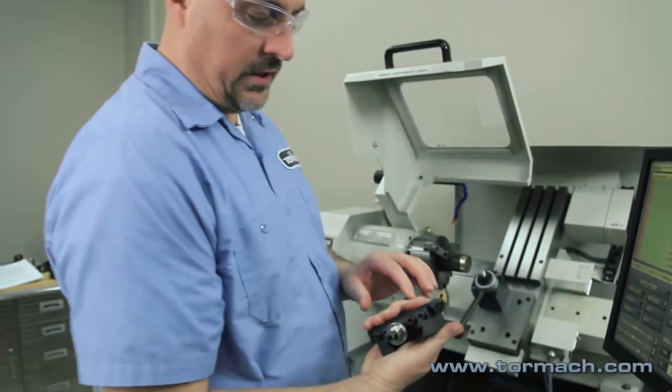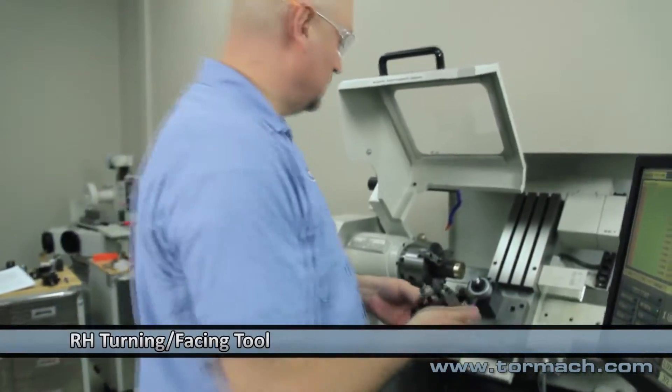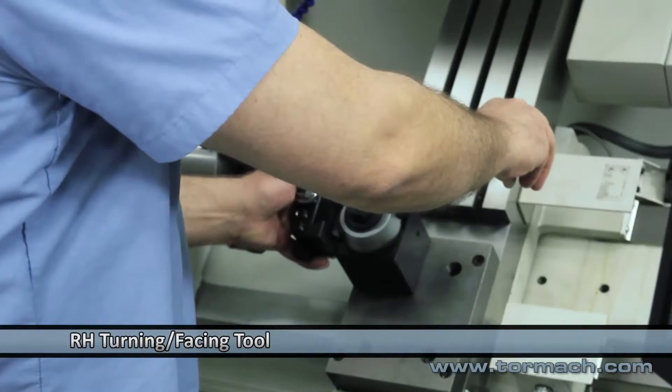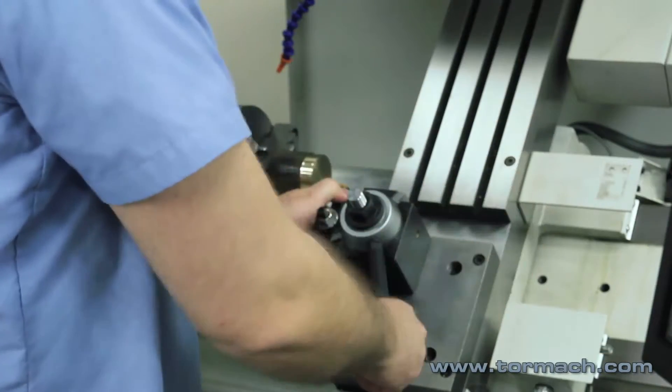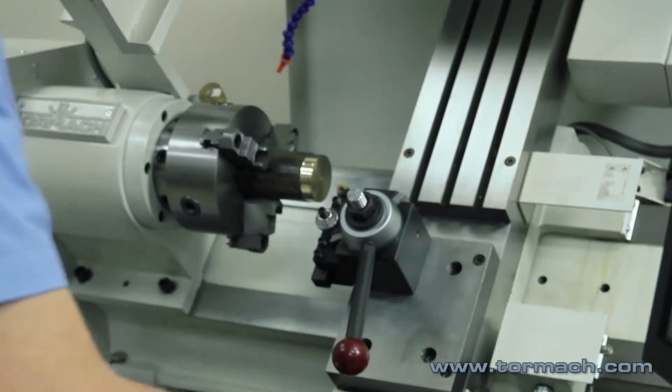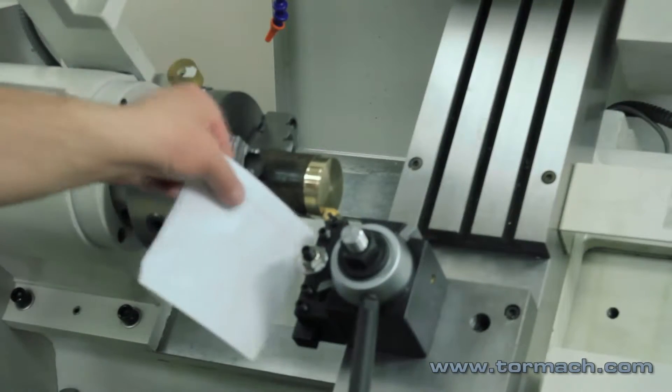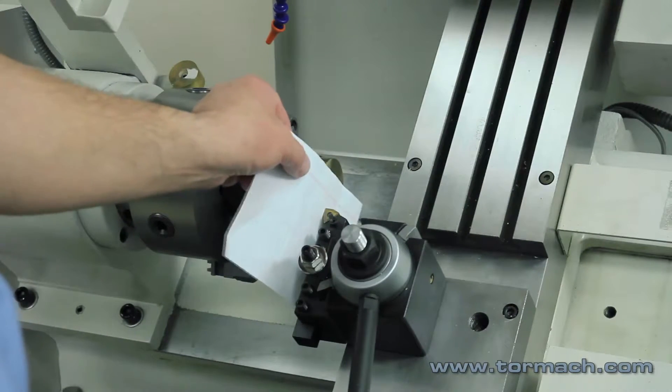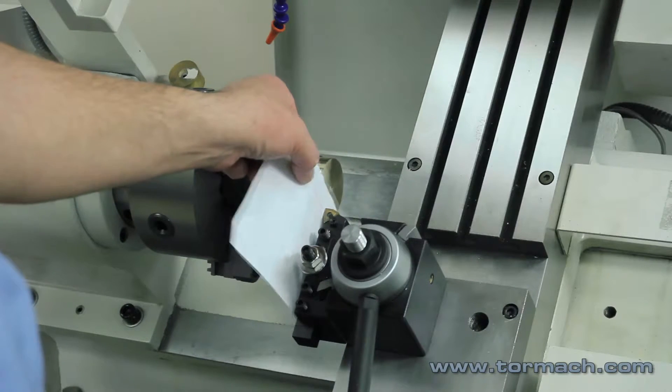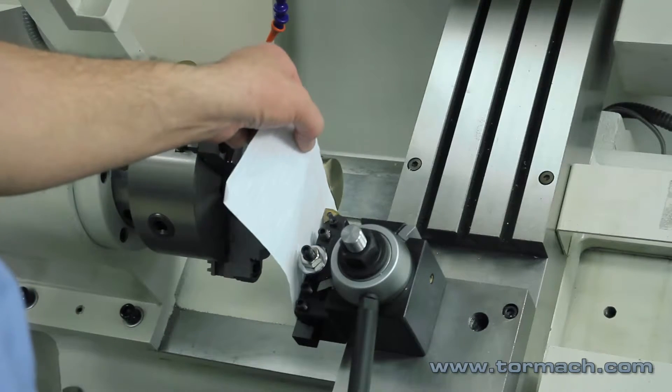Call this tool one, a turning face tool. Then we'll just touch off on the piece of paper again, just like we did with the tool. For our work offset, we'll do the same thing for our tool offset.